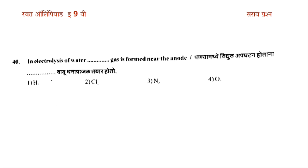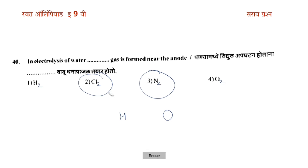In the electrolysis of water, which gas is formed near the anode? The options include H2, CO2, and O2. The answer is O2.